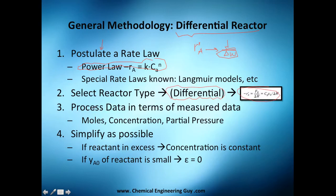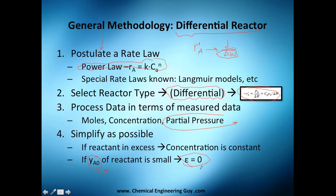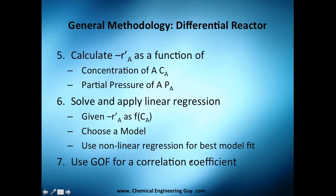We still do the same thing about processing the measured data. Partial pressure is also very common. Simplify as much as possible — if you have a reactant in excess, the concentration may be considered constant, so you can use the excess method. If the initial mole fraction of A is small, I recommend doing this because it simplifies your model. We then calculate the rate as a function of concentration of A or partial pressure of A.